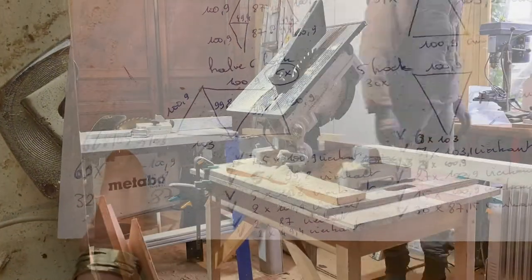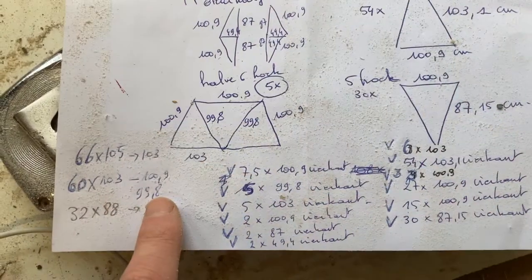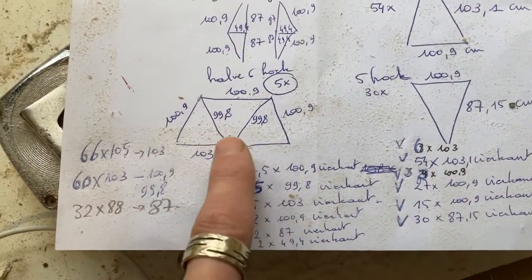And then I cut 66 times 105 to become 103, 60 times 103 to become 100.9 or 99.8, so these shorter struts.